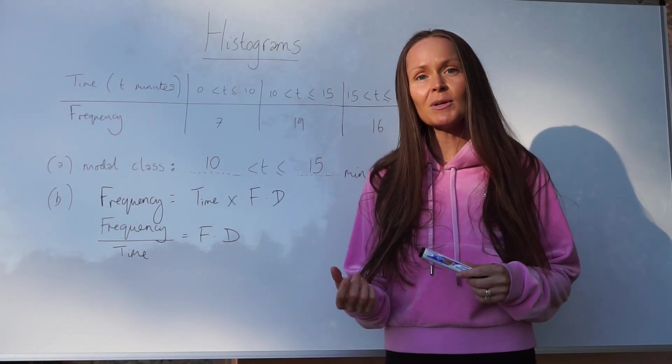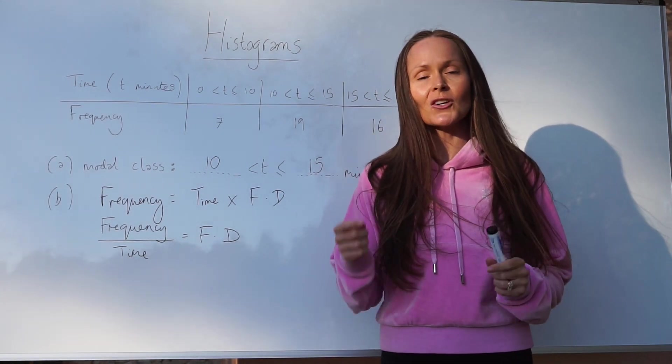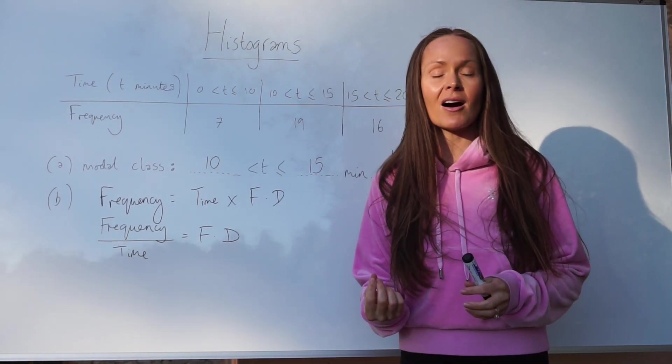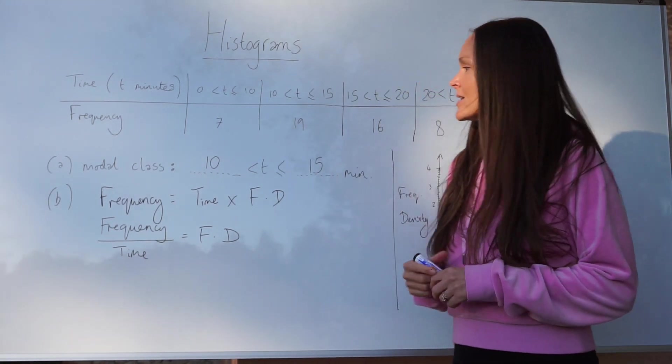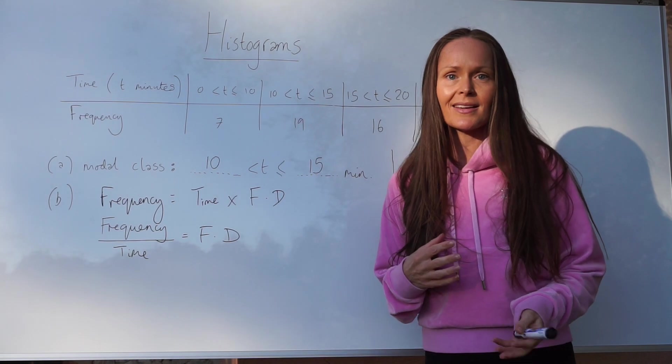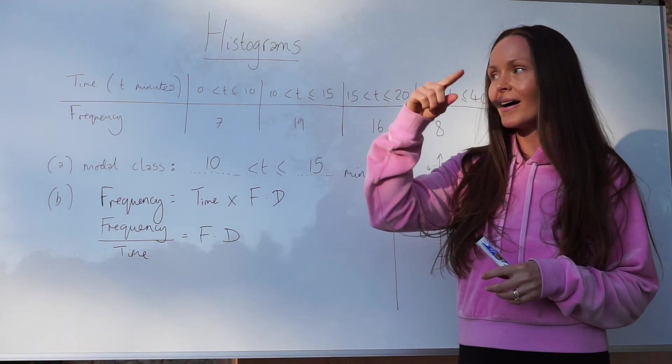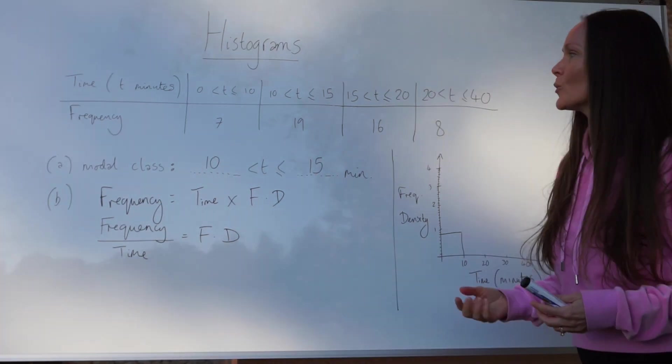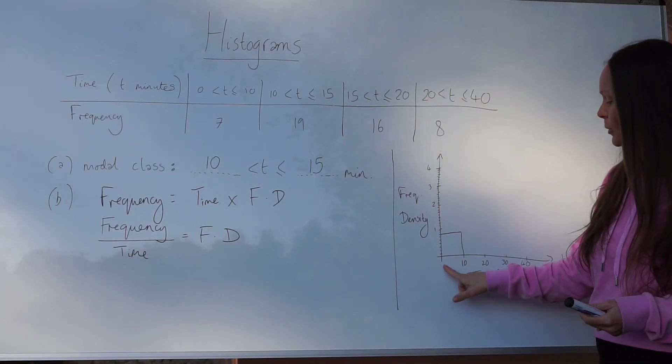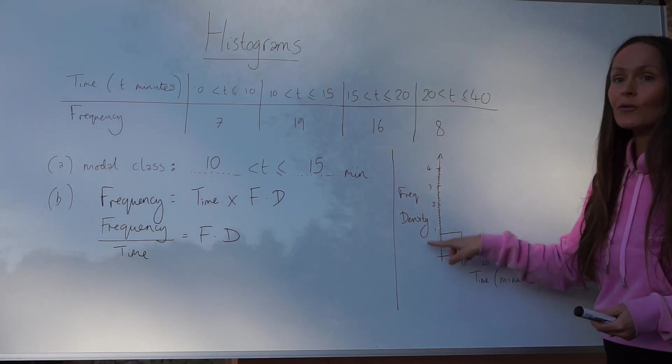Histograms are similar to bar charts, however the widths of the bars can change. Also the area of a bar represents frequency. Because all the bars are either rectangles or squares, to work out the area you would normally multiply the base by the height. What you would do in this question to work out the frequency is multiply time, because that's the base, by the height which is frequency density.